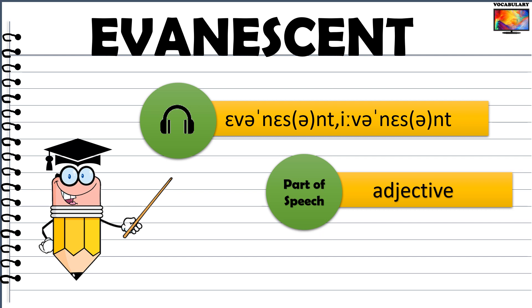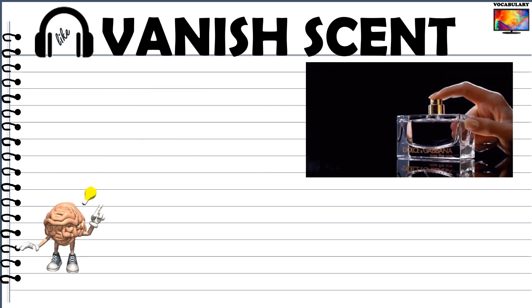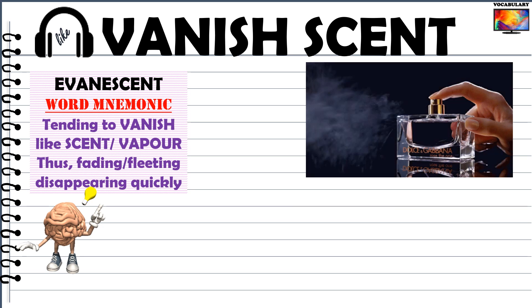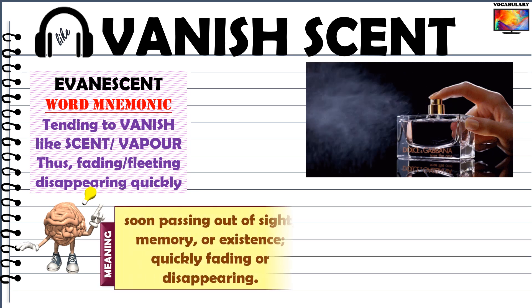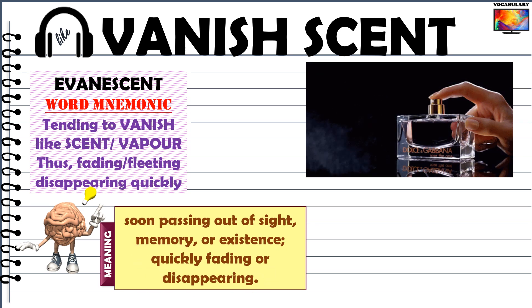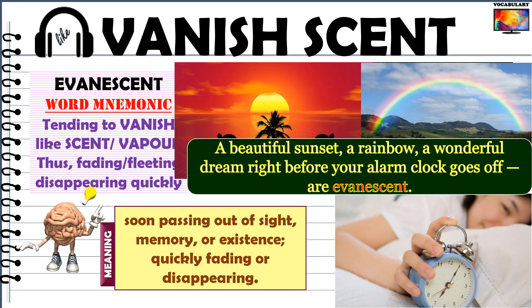Moving on, we have the word evanescent, which is used as an adjective. This word can clearly be broken down into scent and van for vanish. The memory clue is extremely simple — the phrase vanish scent. When you spray scent from a perfume bottle, it tends to vanish or disappear quickly into the air. So the word evanescent simply describes things that tend to disappear quickly and vanish like scent — things that are fleeting and last only for a brief time. Oxford Dictionary defines evanescent as soon passing out of sight, memory or existence; quickly fading or disappearing. Examples include a beautiful sunset, a rainbow, or a wonderful dream right before your alarm clock goes off — all of these could be described as evanescent.